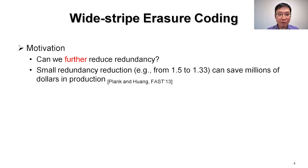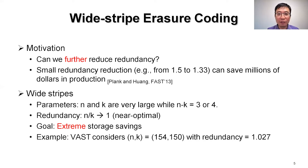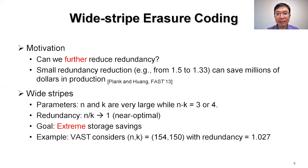Although erasure coding can reduce redundancy, we can't help asking: can we further reduce redundancy? Because a small redundancy reduction can save a lot of money. That motivates us to explore wide stripes in which the parameters n and k are very large, while n-k remains 3 or 4. So the redundancy n over k is close to 1 — near optimal with extreme storage savings. For example, a vast company considers very large n and k for ultra-low redundancy.